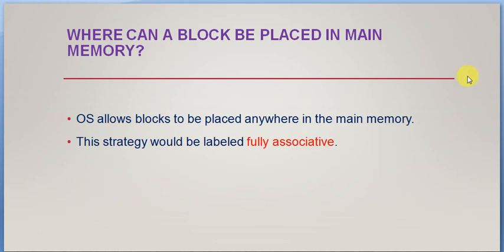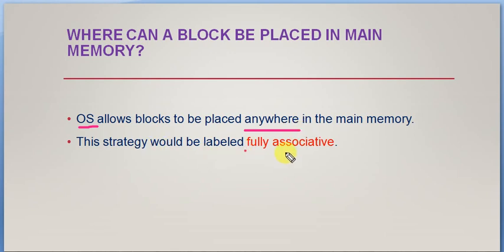Where can a block be placed in main memory? Virtual memory always allows placement of a memory block anywhere in memory. This strategy is usually called fully associative — within the memory, content can be placed anywhere, which is called fully associative placement.